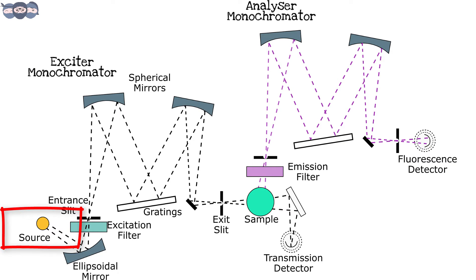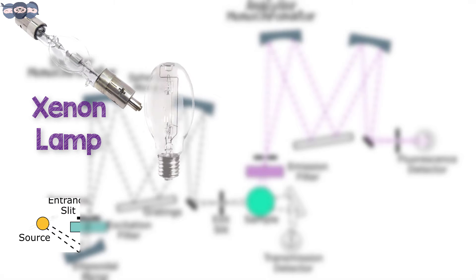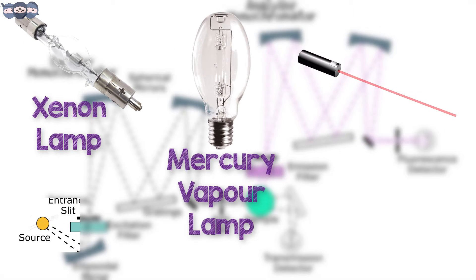The first component of the spectrofluorimeter is the light source. The lamp or light sources that can be used include xenon lamps, high-pressure mercury vapor lamps, lasers, or even LEDs. The laser and LEDs have very specific wavelengths.